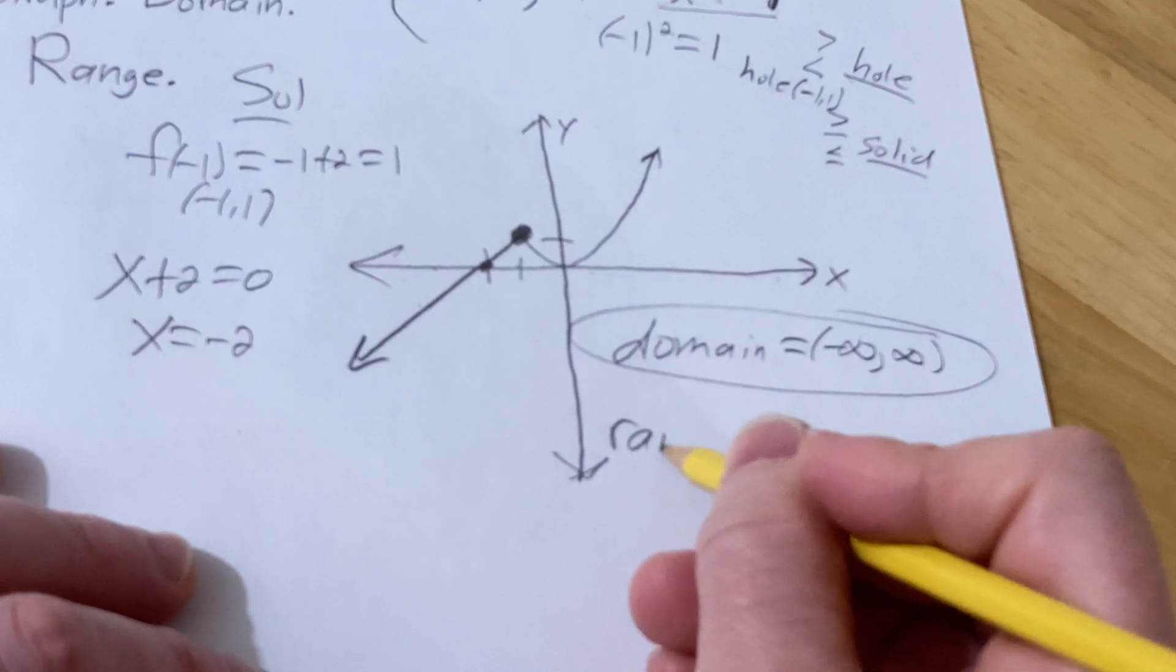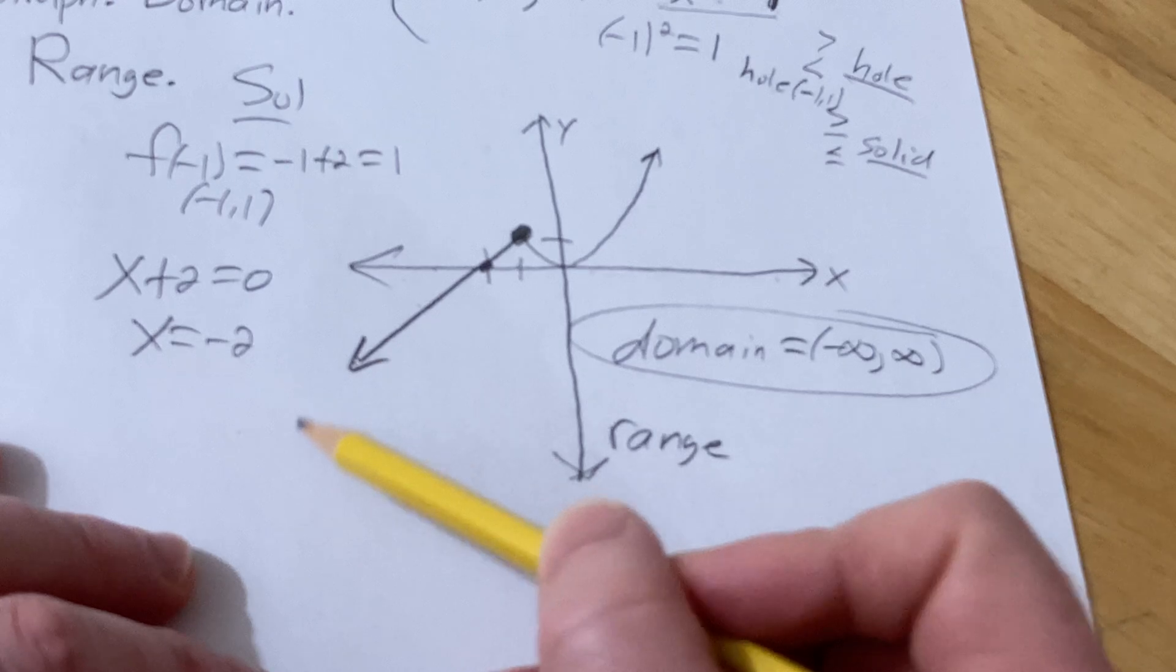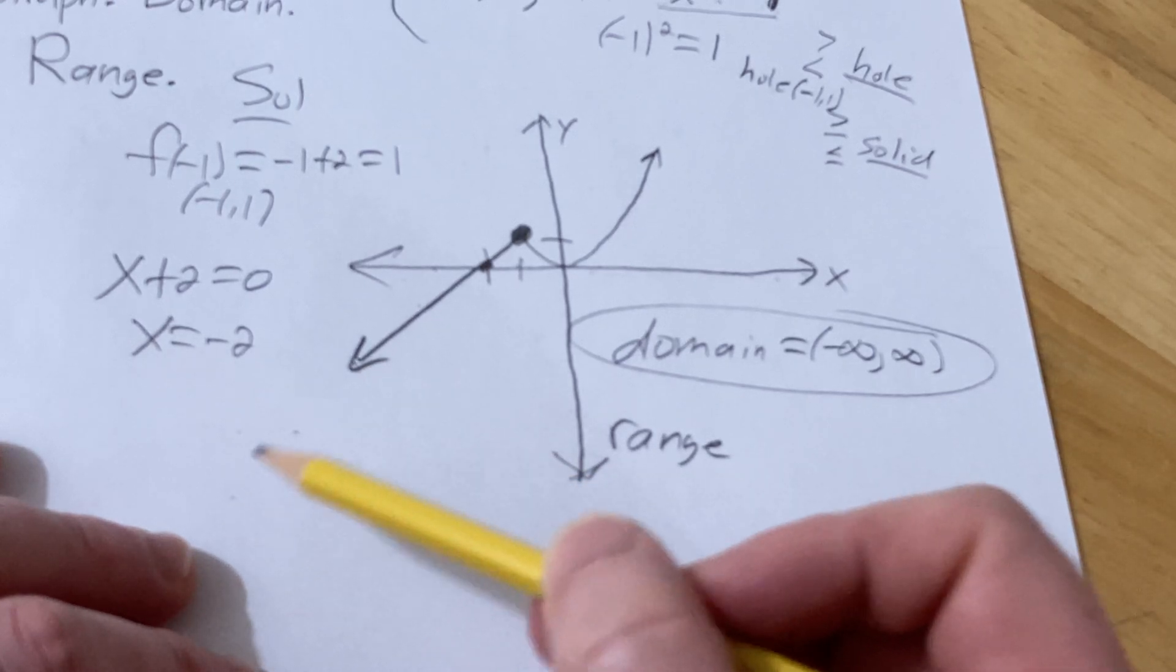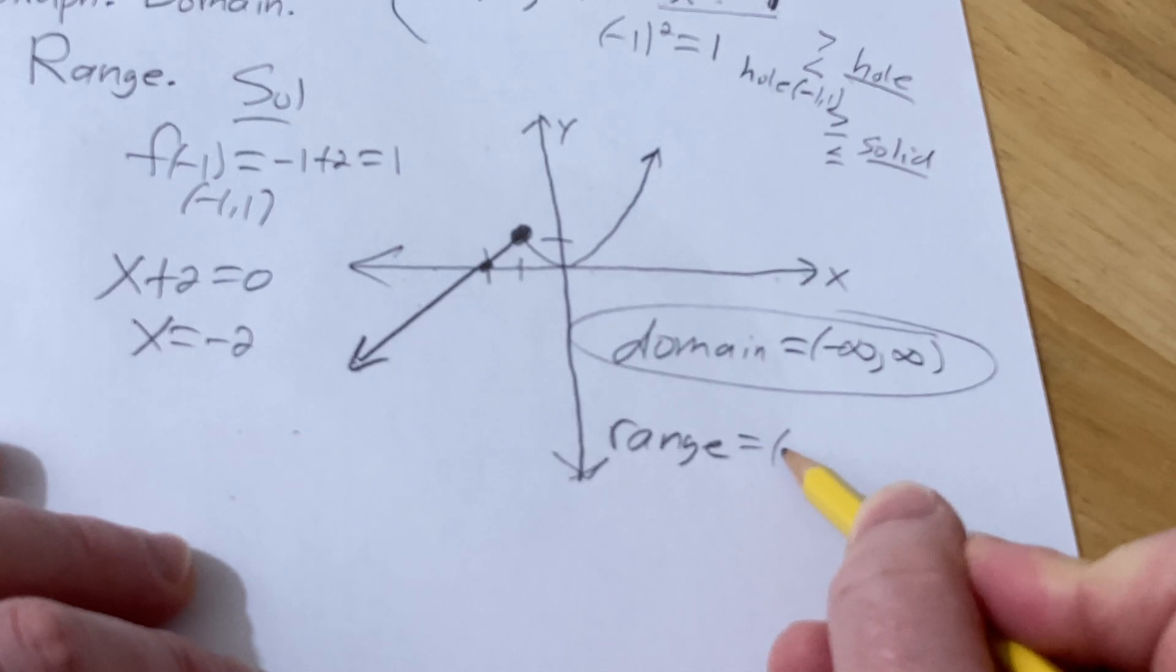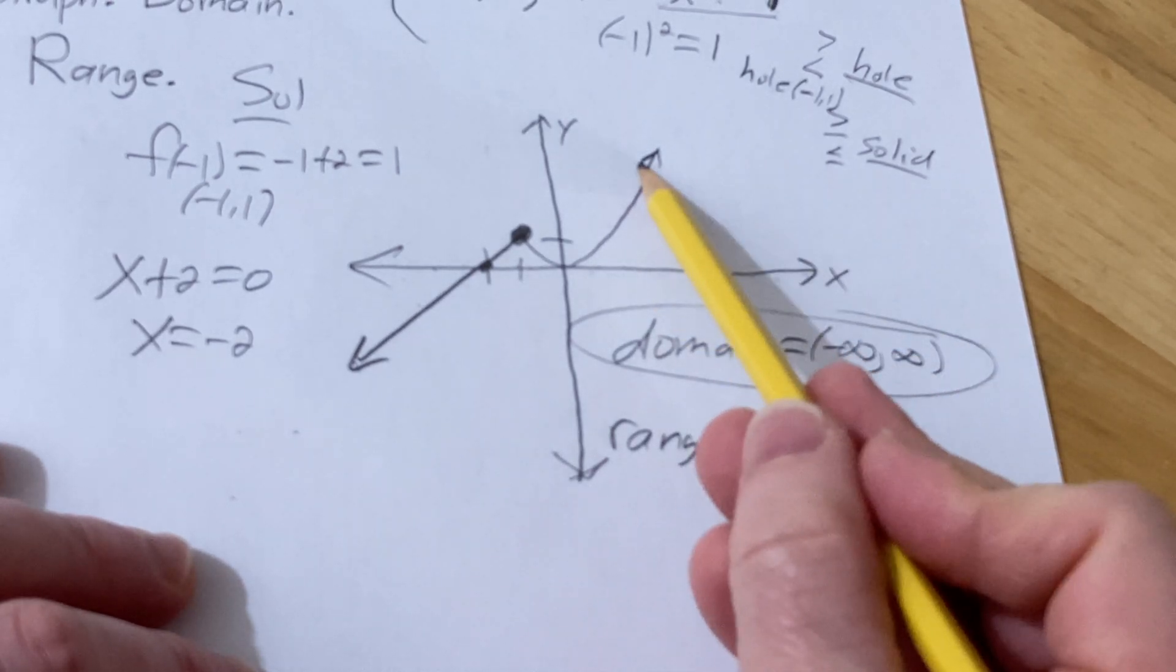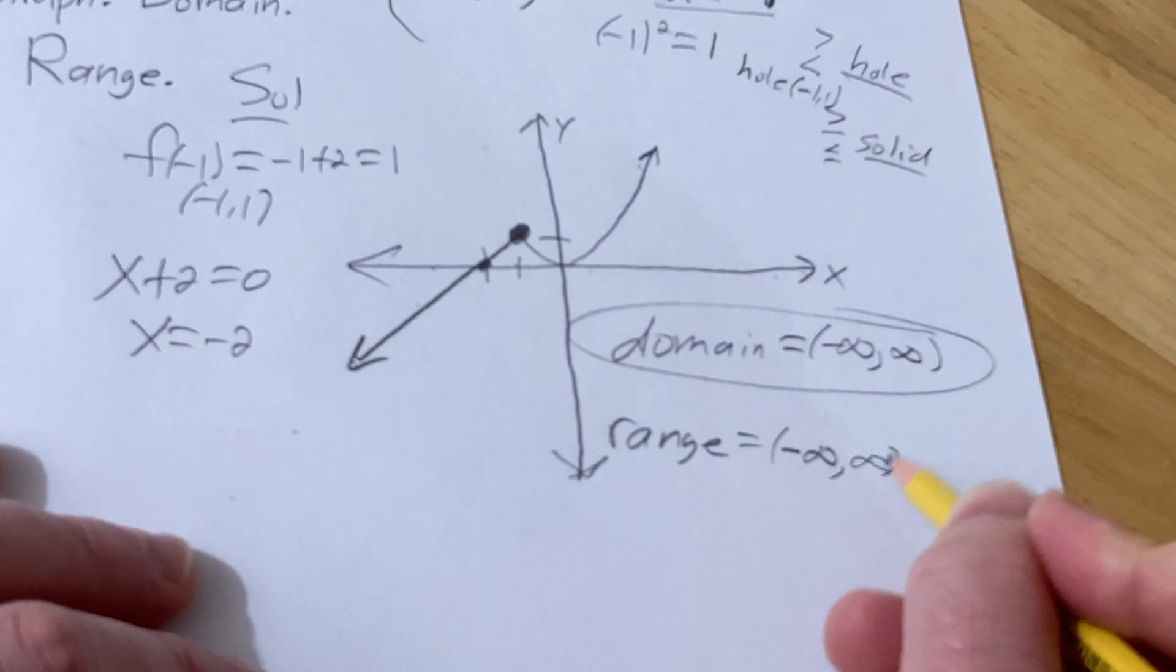As far as the range, the range is the possible y-values. There's an arrow here going down that indicates it goes down forever, so you have infinitely many y-values, so negative infinity. The arrow indicates it goes up forever, so you have infinitely many y-values going up, to infinity.